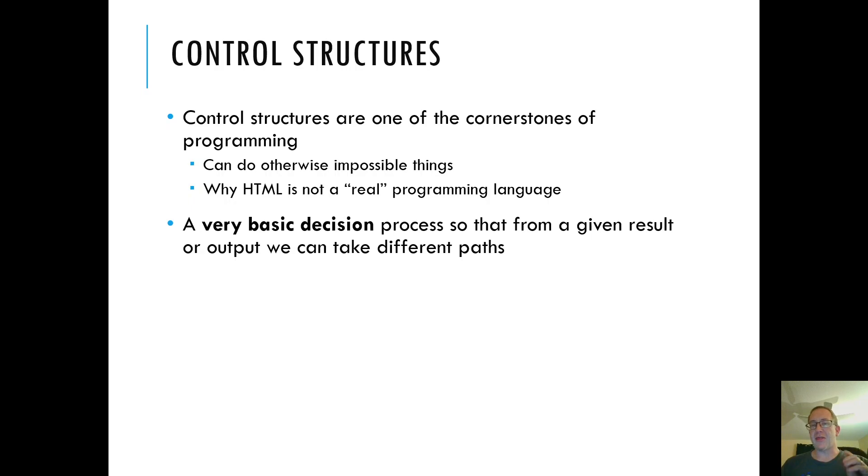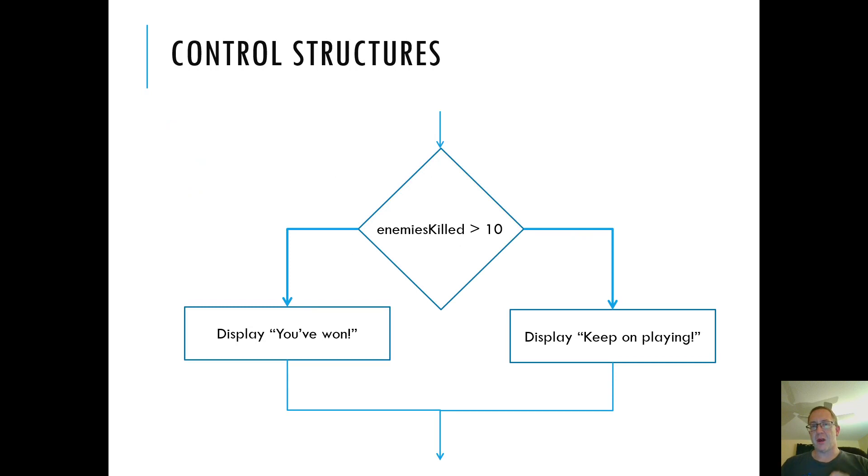And so we're going to look at three different ways we can change the path that a program works. But let's just review what we were looking at last time. So here is a flow chart that we were talking about when we first were looking at algorithmic thinking. And so we had some kind of condition like, is the number of enemies killed greater than 10? If so, then display you've won.